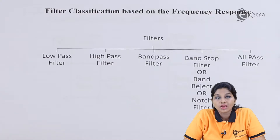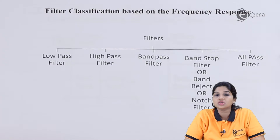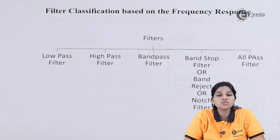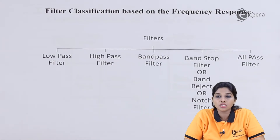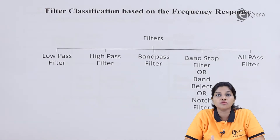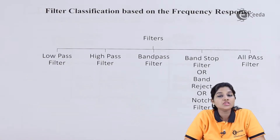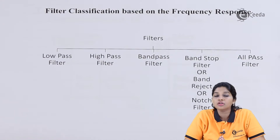We know that a filter is a circuit which is nothing but a frequency selective circuit. The frequency selective circuit provides pass band and stop band. Pass band is a band of frequency which is allowed by the filter, whereas stop band is a band of frequency which is attenuated or stopped by the filter. Based on the frequency response, the different types of filters get classified.